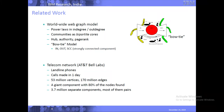Many years back, AT&T Bell Labs — being a telephone company with research capabilities — did what I think was the first study of this kind, where they looked at all landline phones. They studied all the calls made in one day and got a huge graph with 53 million vertices. That was really one of the first studies of this kind.